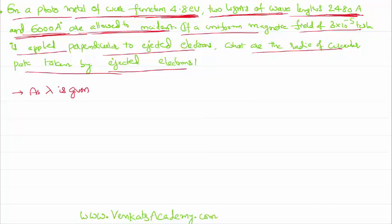As wavelength lambda is given in angstrom, we can get the energy directly in electron volts using the formula: energy in electron volts equals 12400 by lambda in angstrom. Using that formula, 12400 by 2840 angstrom will give an energy of 5 electron volts.